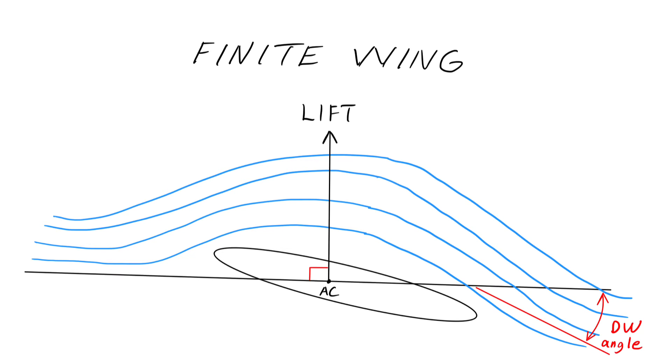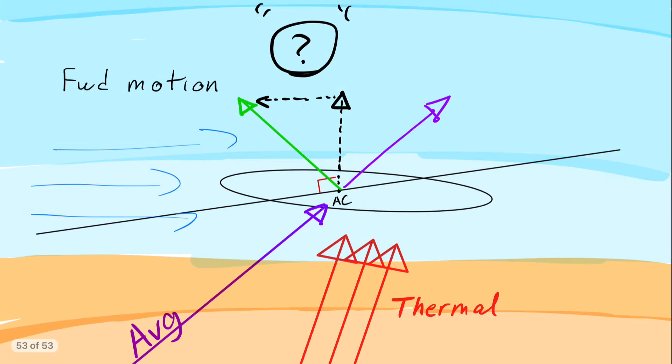All pilots will agree that lift is perpendicular to the relative wind. Let's say that you're in a glider or a small airplane flying over the desert. You hit a very large thermal heat wave from the ground. You get an increase in your average angle of attack.